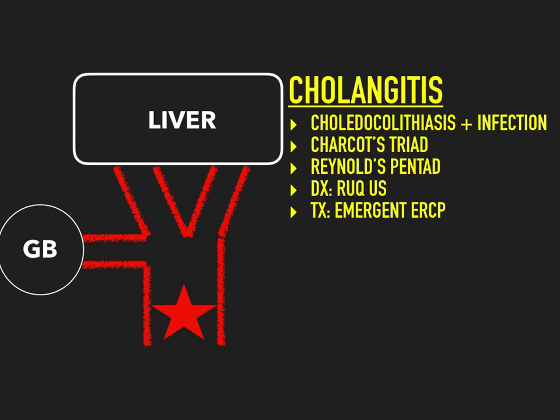To summarize cholangitis: also known as ascending cholangitis, it is a stone in the common bile duct that causes infection — basically choledocholithiasis plus an infection. You have Charcot's triad 100% of the time: fever, jaundice, and right upper quadrant pain. If the patient progresses, they develop Reynolds pentad, which adds hypotension and altered mental status — a poor prognostic factor indicating possible shock. Diagnose quickly with a right upper quadrant ultrasound, then do an emergent ERCP to pull out the obstructing stone.